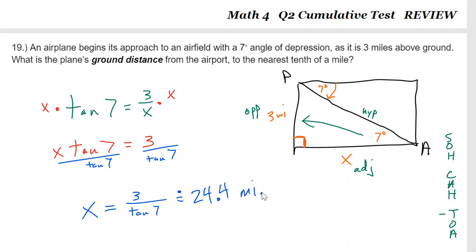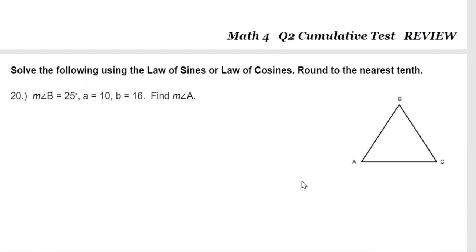And that means that x is equal to three divided by tan seven. And I'm going to use, and please remember to use division on this. This is not multiplication. And the calculator says 24.4. That is the ground distance in miles. All of the units were in miles, so we don't have to worry about conversion. I have seen problems where they talk about the plane is at so many thousand feet and then how many miles is it from the runway. That's a conversion issue on top of Sokotoa.